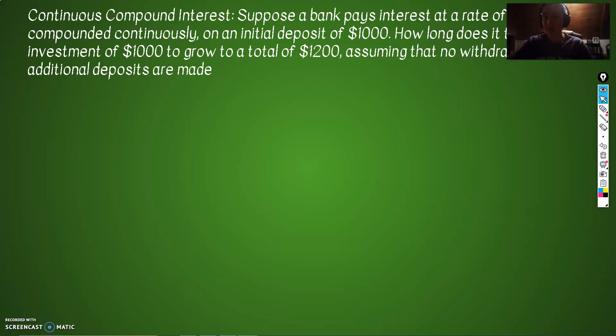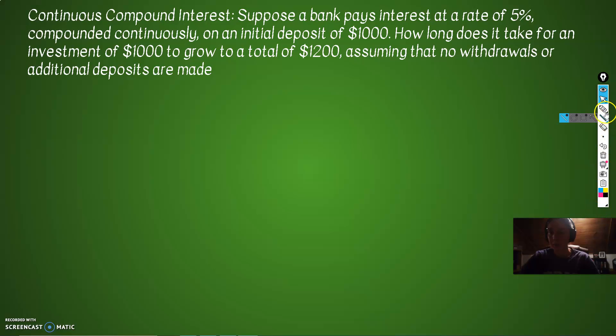First off, let me move the little reporting of me. So suppose a bank pays interest at a rate of 5%. I like it when they give us the numbers of stuff. Compounding continuously on an initial deposit of $1,000.